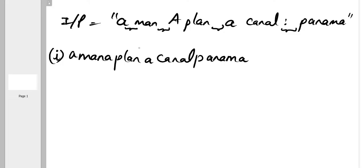If a string reads the same forward and backward, all characters on the left side and right side would be matching. The first character would be the same as the last, the second character the same as the second last, the third the same as the third last, and so on. If all characters mirror each other, we can say it is a valid palindrome.